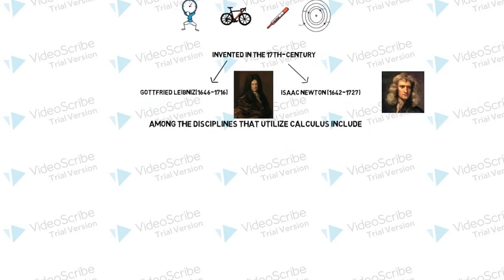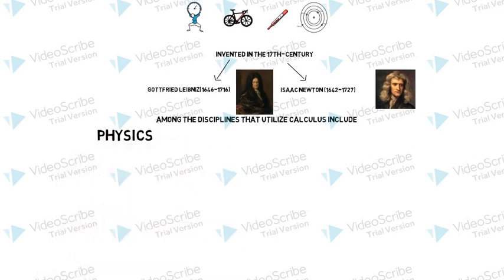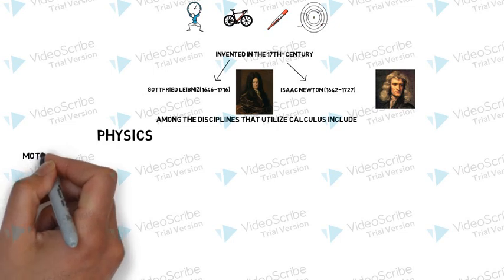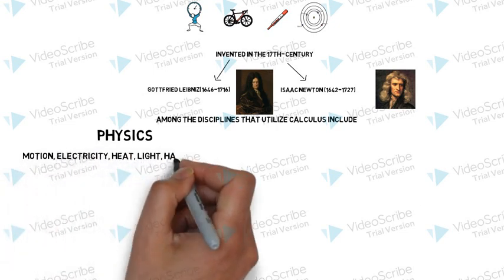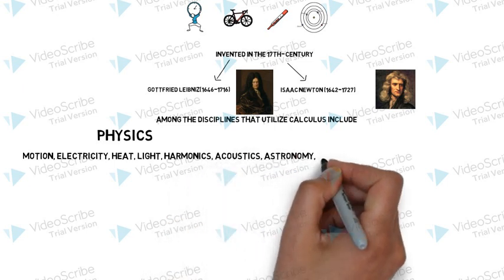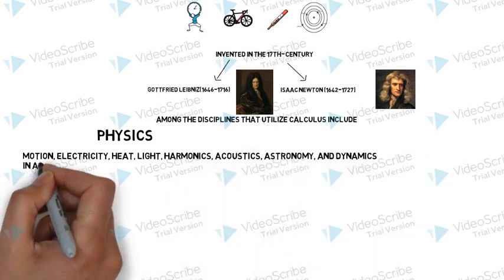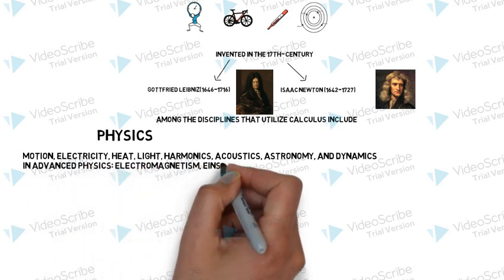If we look at physics, calculus appears in different disciplines like electricity, heat, light, harmonics, acoustics, astronomy and dynamics. If we look at advanced physics, we find electromagnetism, Einstein's theory of relativity and fluid mechanics in different disciplines.